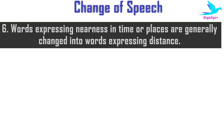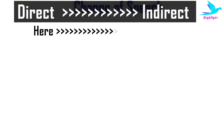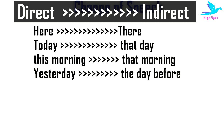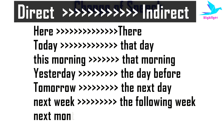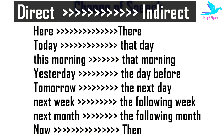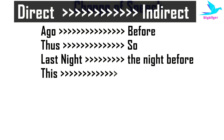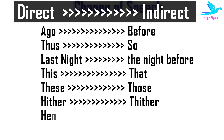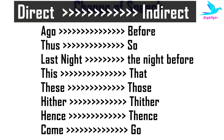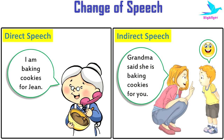Finally, words expressing nearness in time or place also change: 'here' becomes 'there,' 'today' becomes 'that day,' 'this morning' becomes 'that morning,' 'yesterday' becomes 'the day before,' 'tomorrow' becomes 'the next day,' 'next week' becomes 'the following week,' 'next month' becomes 'the following month,' 'now' becomes 'then,' 'ago' becomes 'before,' 'thus' becomes 'so,' 'last night' becomes 'the night before,' 'this' becomes 'that,' 'these' becomes 'those,' 'hither' becomes 'thither,' 'hence' becomes 'thence,' and 'come' becomes 'go.' These are all the rules for direct and indirect speech, which will become clearer through practice.